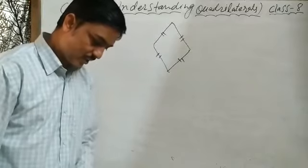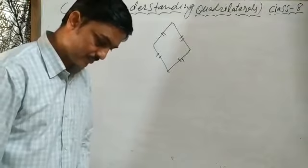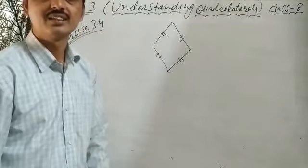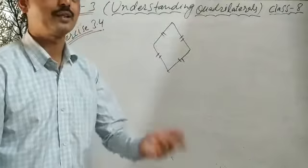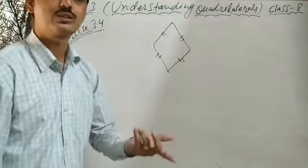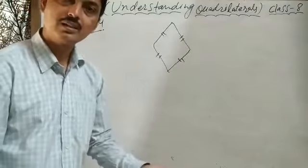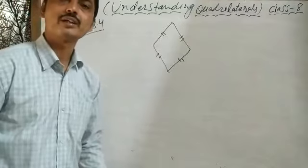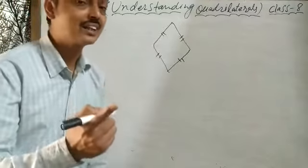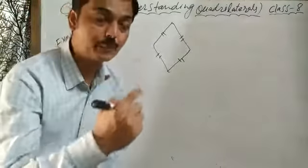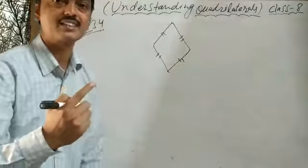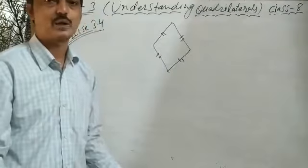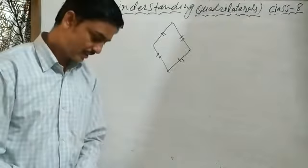All squares are trapezium — yes. Because in a square, opposite sides are parallel. A trapezium is a quadrilateral in which one pair of opposite sides is parallel only, not necessarily equal. Therefore this is true.